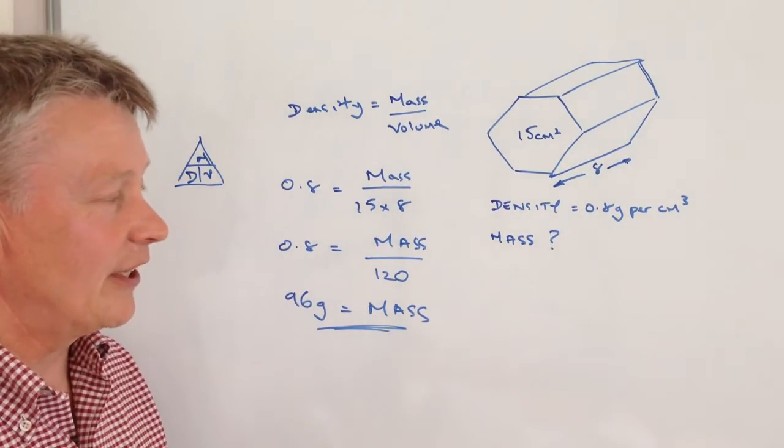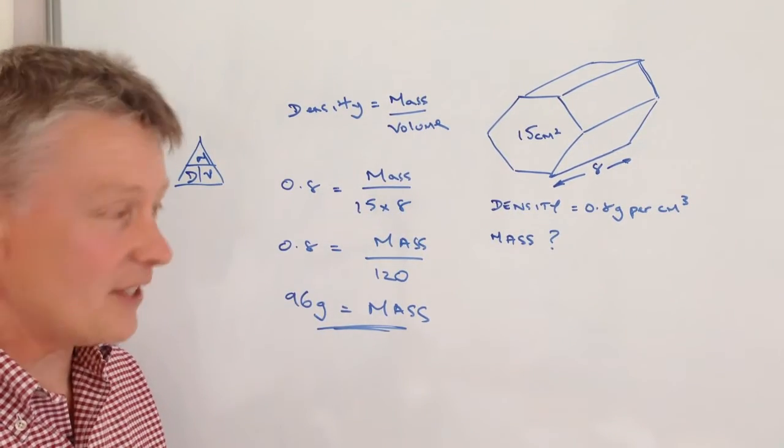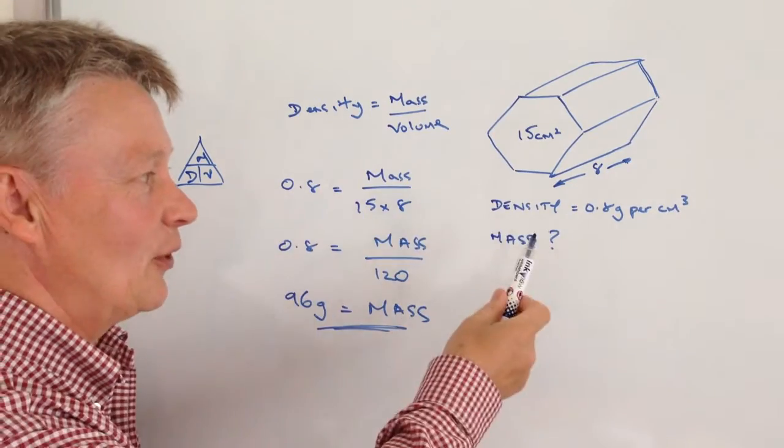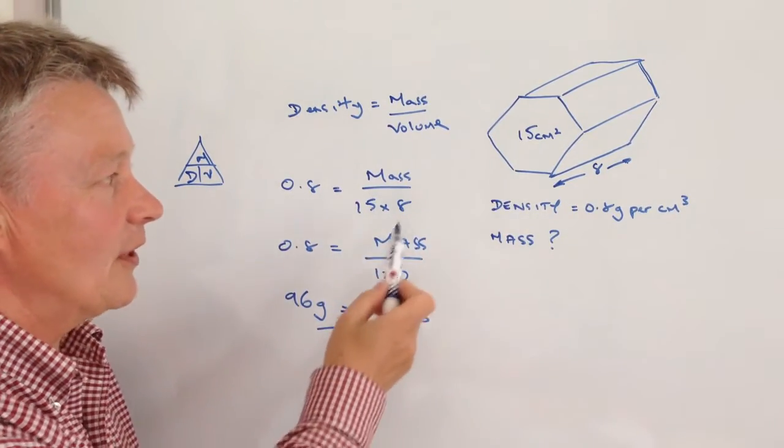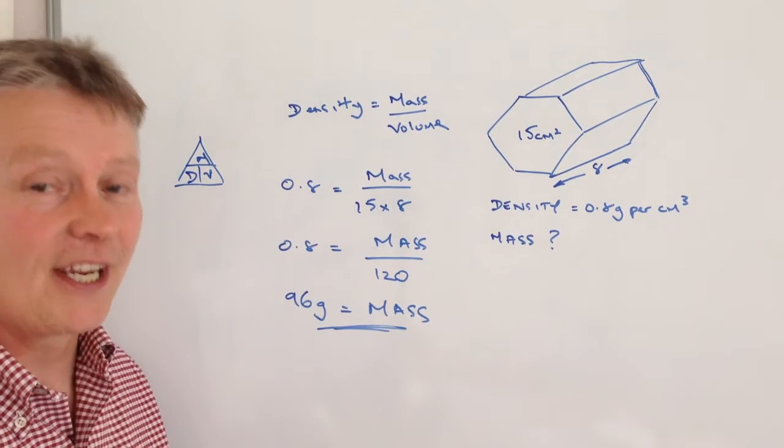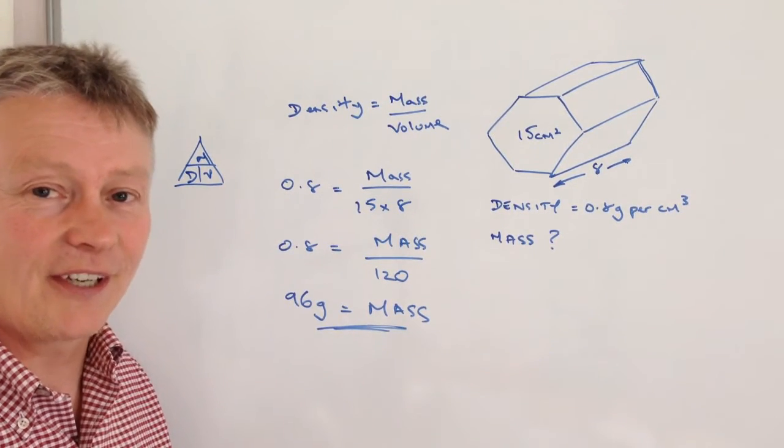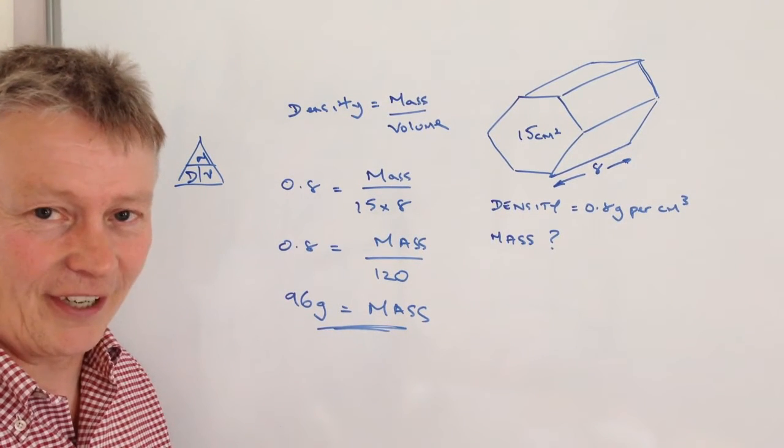Okay, I hope that's been okay for you. It's a very quick example of how we can work with density, mass, and volume. In order to find, if we've got two pieces of information, we can find out the third piece. Please do add a comment below, I'll always come back to you. I'll look forward to seeing you inside the next video.